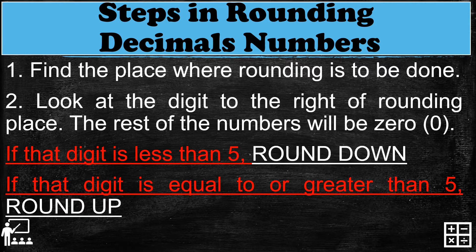Second, look at the digit to the right of the rounding place — the rest of the numbers will be zero. Take note: if that digit is less than five, we round down, which means we just keep the number as is. And if that digit is equal to or greater than five, we round up, which means we add one.